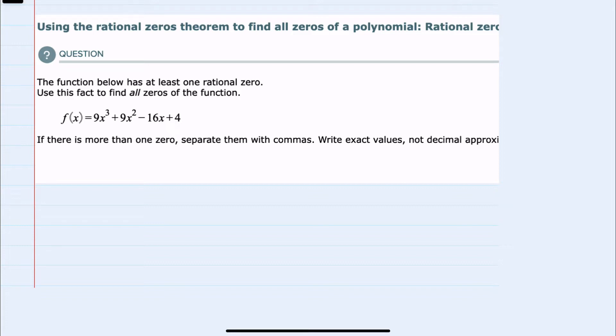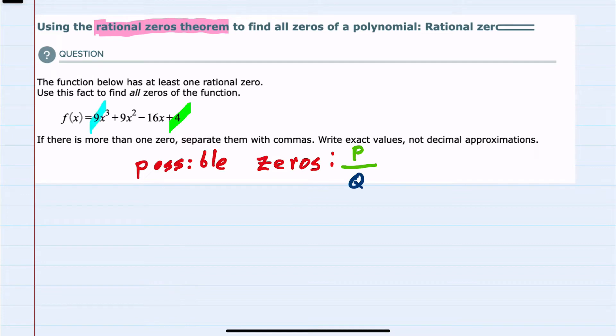Here we're given the function f(x) and told that it has at least one rational zero, and we're asked to find all of the zeros for this function. I'll start with the rational zeros theorem, which says that all of the possible zeros will be of the form p over q, where p is the possible factors of the constant term, and q is the possible factors of the leading coefficient.